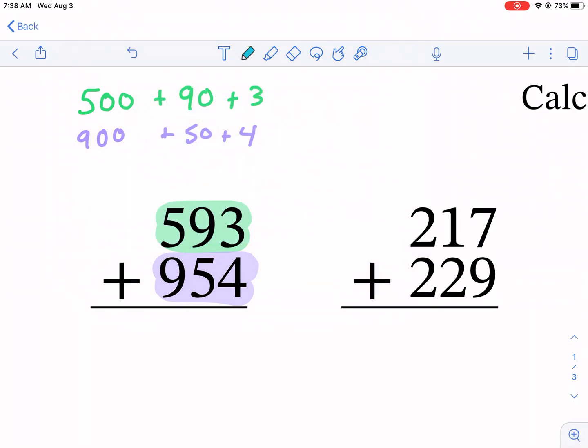As we start, the first thing we're going to do is look at the 3 and the 4 in the ones place and add them together. We get 7. 3 plus 4 is 7, so we got that part down.